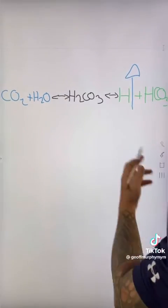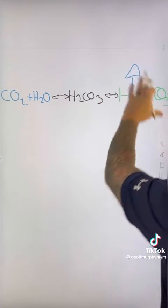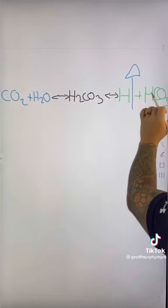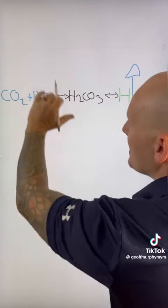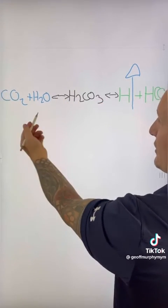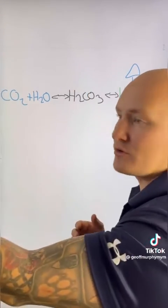When that occurs, we compensate by sending this hydrogen, binding it with our bicarb, creating carbonic acid, then sending it to the lungs to split it into CO2 and water, and ultimately blowing off as much CO2 as possible to normalize our hydrogen, which creates a decrease in CO2.